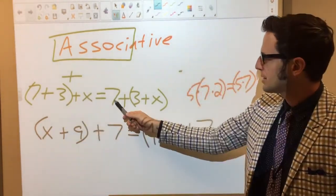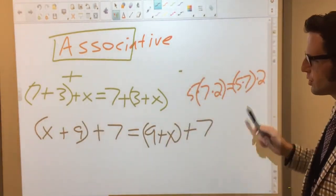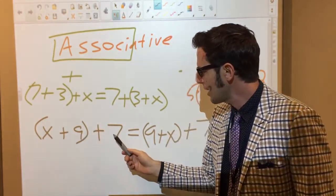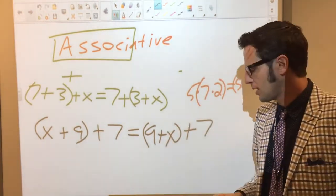7, 3, x, 7, 3, x, 5, 7, 2, 5, 7, 2, x, 9, 7, 9, x, 7, the order changed.